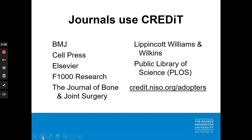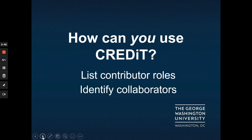And the Public Library of Science. For a full list of journals, publishers, and other platforms, see credit.niso.org. Authors can use CRediT to list their contributor roles on publications. They can also identify collaborators from previously published research by looking at the list of contributor roles to find collaborators with unique skills like data visualization or software management.